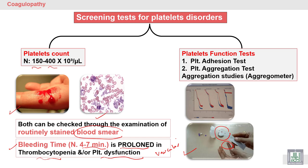Another specific test for platelet function is platelet aggregation studies, used to study adhesion and aggregation and to diagnose Bernard-Soulier syndrome and Glanzmann's disease. These aggregation studies are done in an aggregometer, which is now automated, and you can check the report after the test to identify where the defect is.